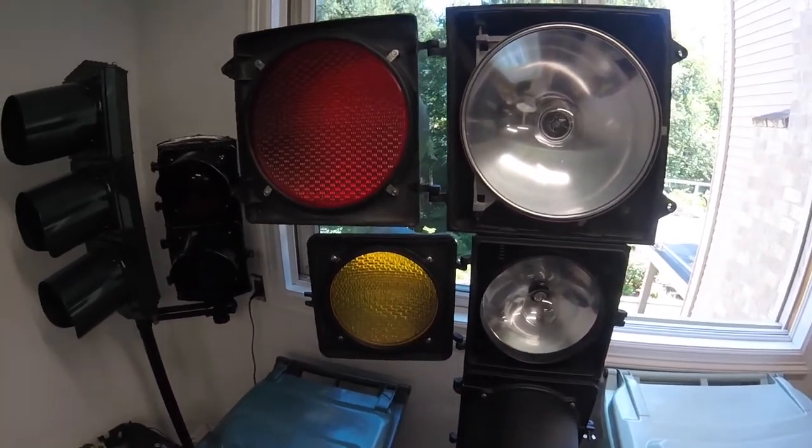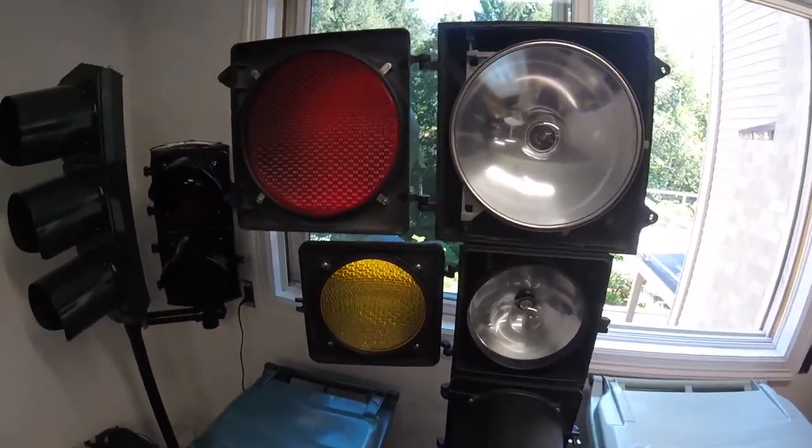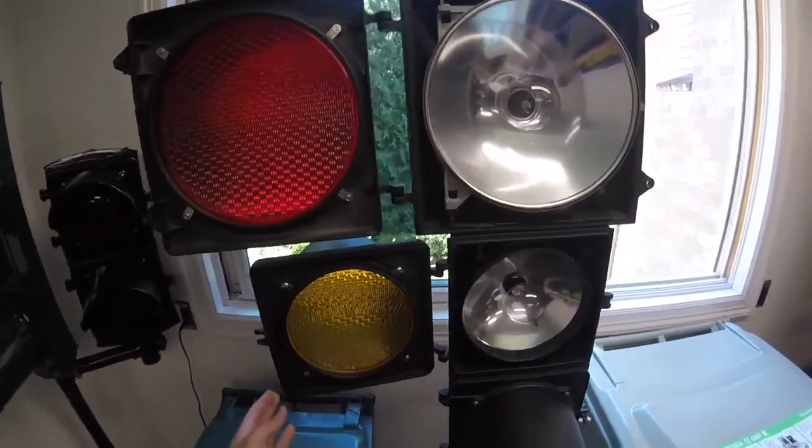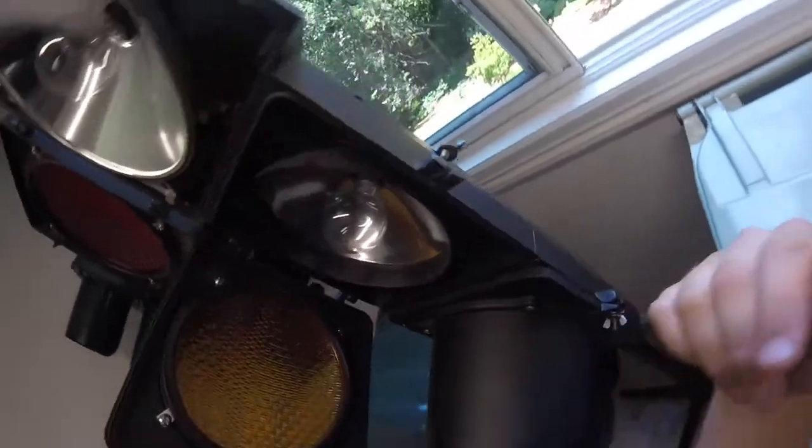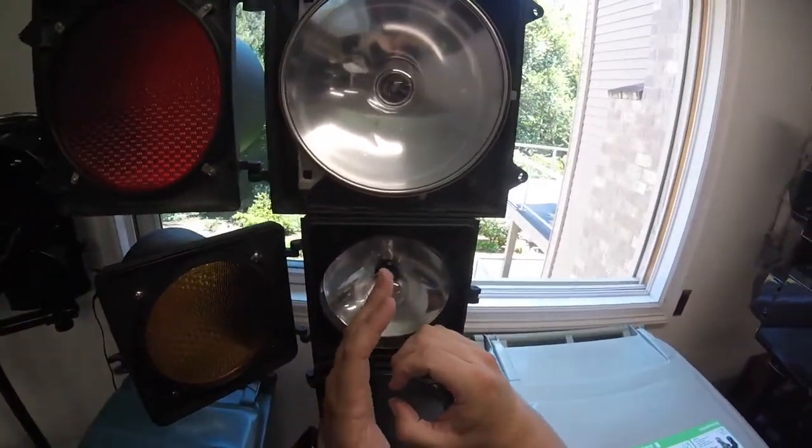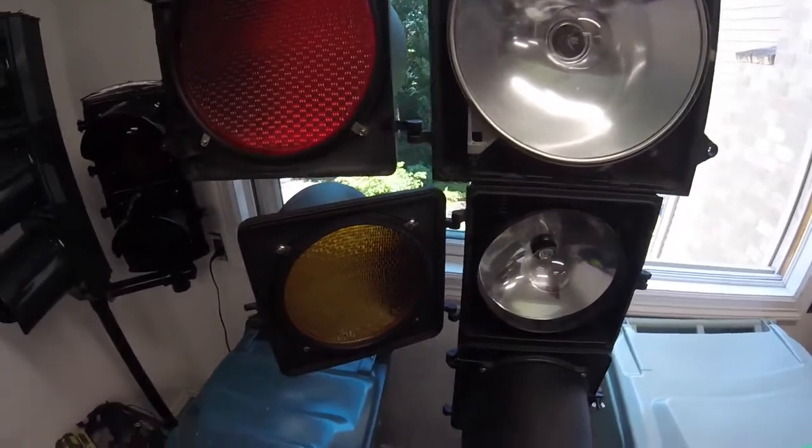Polycarbonate lenses won't shatter the way a glass lens will. However, they do have their own drawbacks. For starters, they are susceptible to heat, and obviously this bulb puts out a lot of heat.